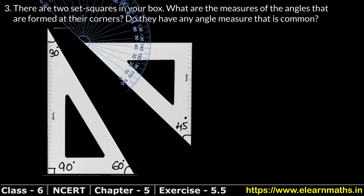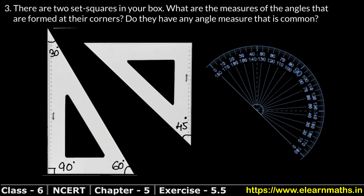Now we have 0 degrees here. The 0-degree line is on the lower line, and it is exactly 45 degrees on the lower angle. So this is our second 45-degree angle.